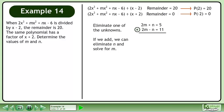Eliminate one of the unknowns. If we add, we can eliminate n and solve for m. Add the two equations to get 4m equals 16. Divide both sides by 4 to isolate m. This gives us m equals 4.